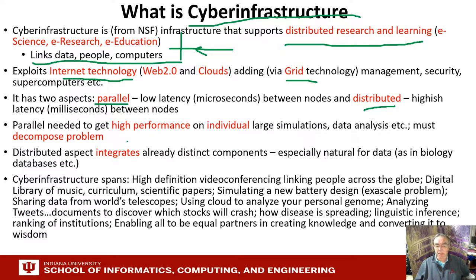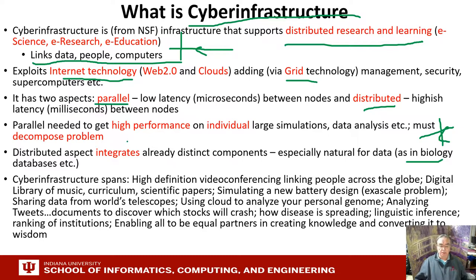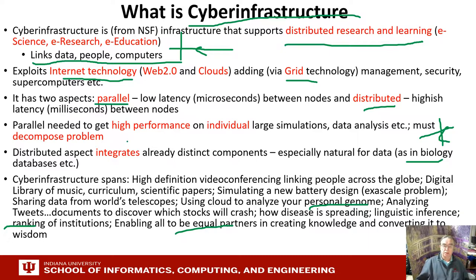For parallelism we need to do data decomposition. The distributed model is particularly relevant for fields like biology with distributed gene sequencing, or environmental science with distributed sensors. Cyber infrastructure can be used for almost everything — from video conferencing to designing a new battery, analyzing telescope data, personal genomes, tweets, the stock market, spread of disease, language, and ranking institutions. It's really just a general term for infrastructure.